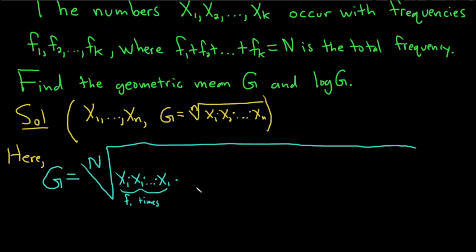Then x2 times x2 times dot dot dot times x2, and there's f2 copies of x2. So this appears f2 times.